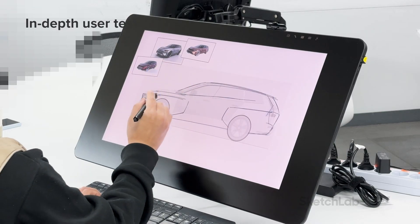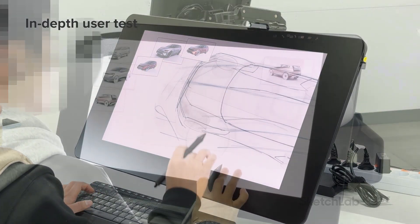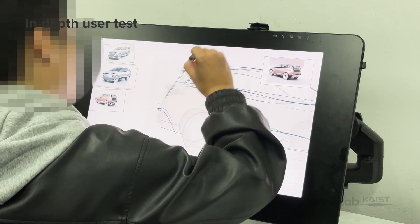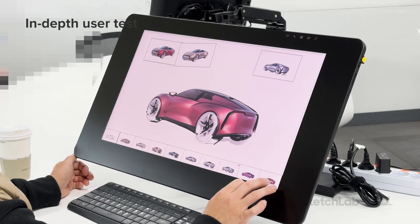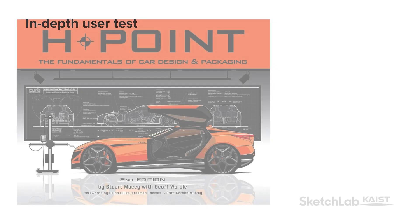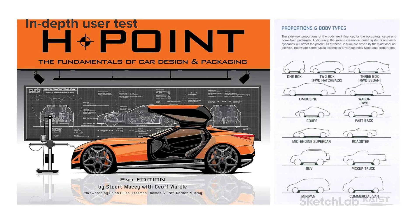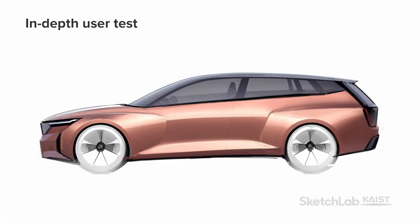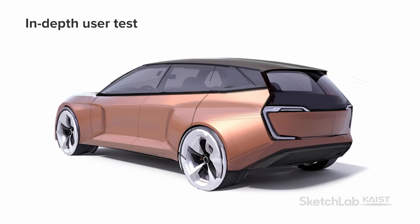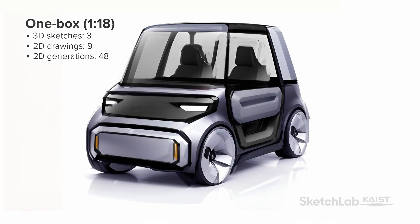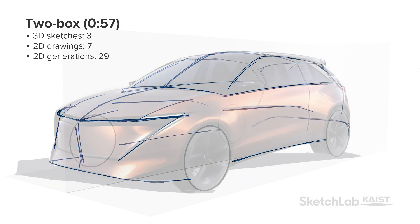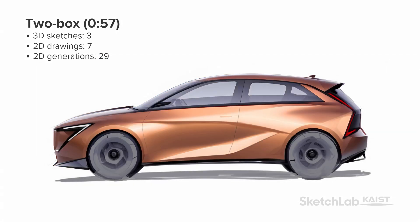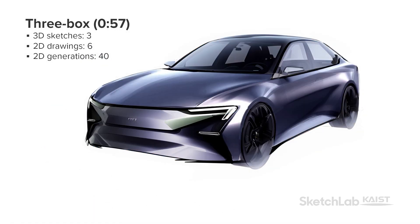To investigate how our proposed workflow may benefit car exterior design practice, we conducted an in-depth user test with a veteran car designer with 15 years of work experience. During the test, the designer produced rendering sets for all 13 major car body types, including front 3-quarter, side, and rear 3-quarter views — the most commonly used viewpoints in car design. The designer quickly learned our system and successfully created sets of renderings with high view consistency and quality within an average of 1 hour and 4 minutes per car.